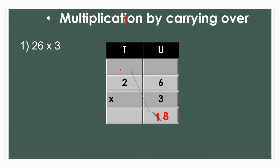This 1 will go here in the tens place, and only 8 is remaining under the units place. Now we are going to multiply again. 3 twos are 6, and we already have one 10 carried over, so 6 plus 1 is 7. The final product is 78. So 26 multiplied by 3 is equal to 78.